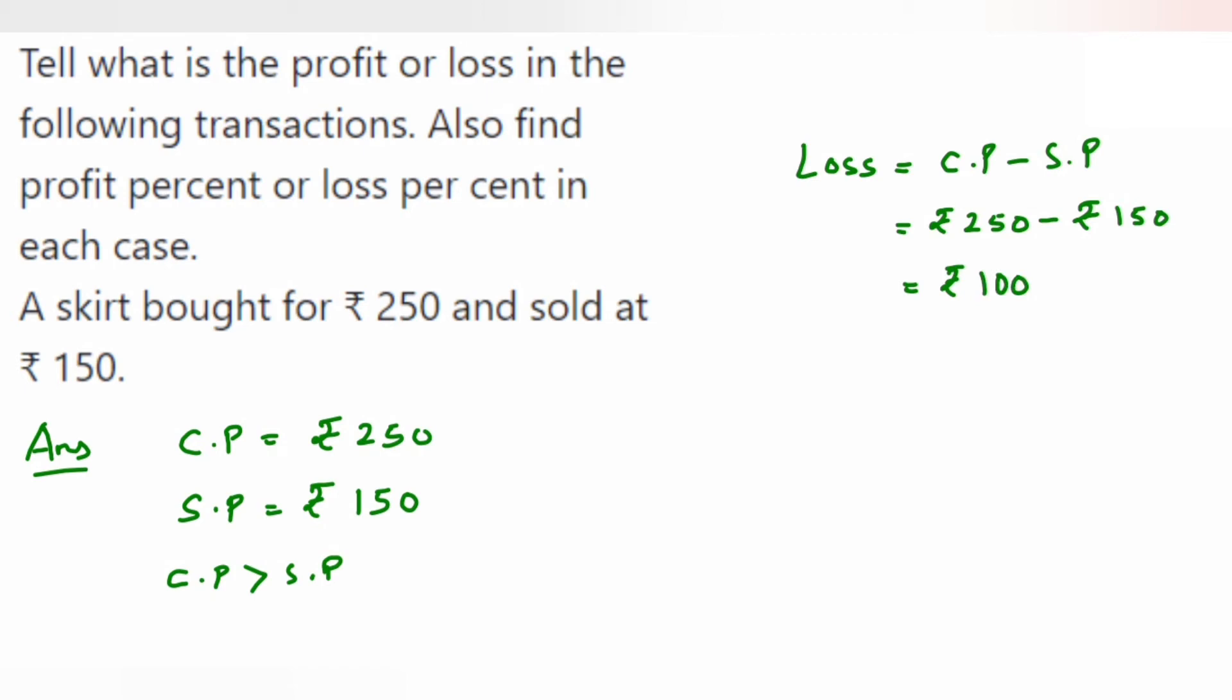Now you have to find out the loss percentage. So loss percentage is equal to loss upon CP multiplied by 100. Now we'll substitute the values here, so loss is equal to 100 and CP is 250, so multiplied by 100.